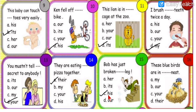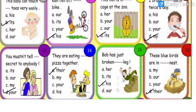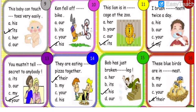Number sixteen: these bluebirds are in dash nest. The birds are more than one — plural. Options are my, our, your, or their. The birds are in their nest — the nest belongs to them. The answer is option D. These bluebirds are in their nest.